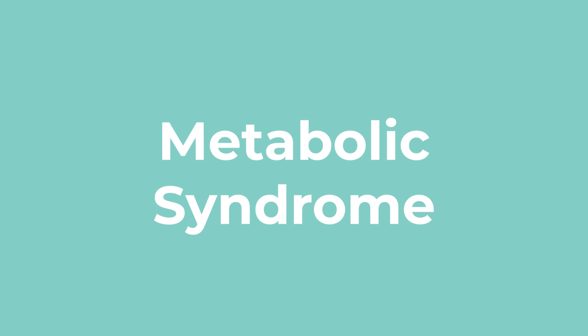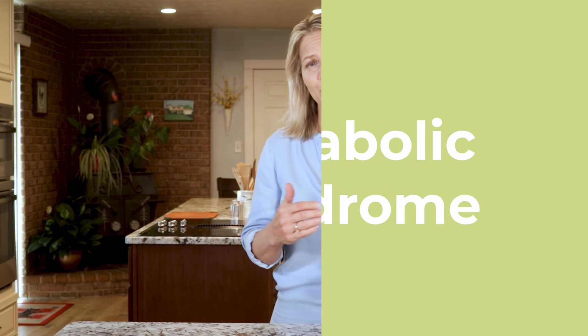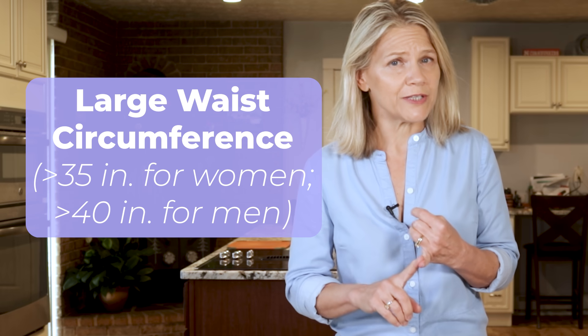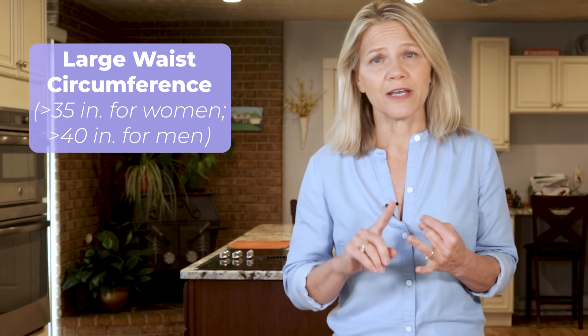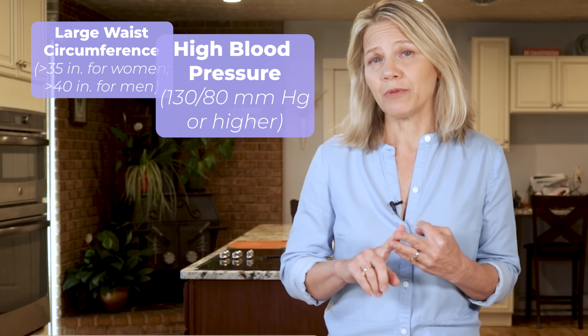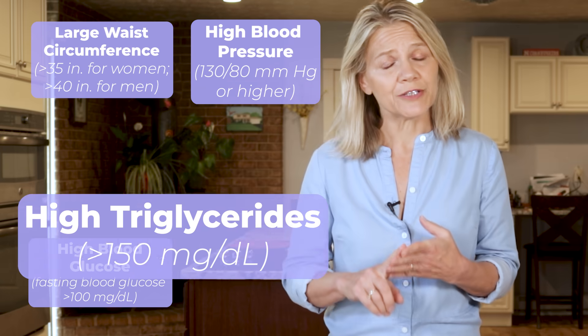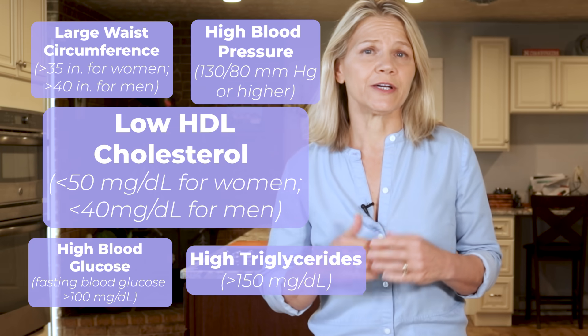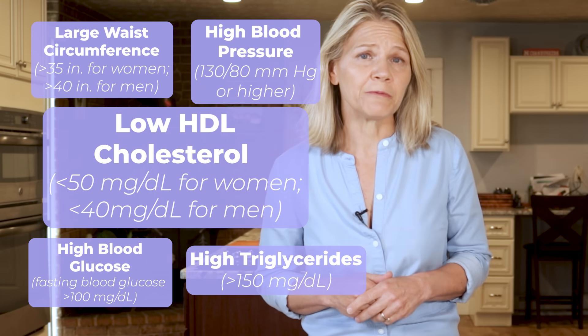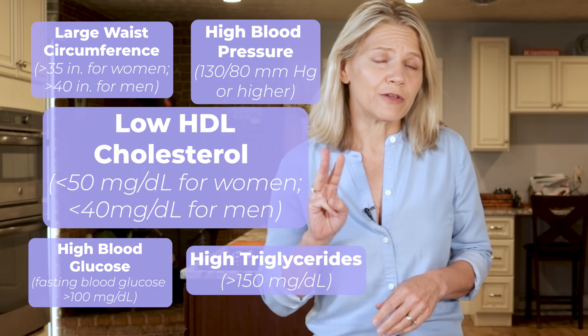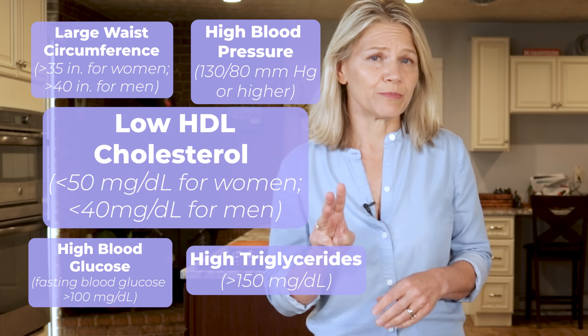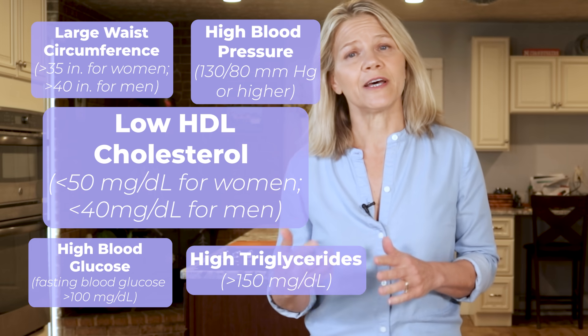A lack of metabolic health is evaluated based on five criteria, including a large waist circumference, high blood pressure, high blood glucose, high triglycerides, and low HDL cholesterol. When three or more of these factors are present, the diagnosis is metabolic syndrome.